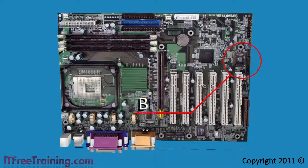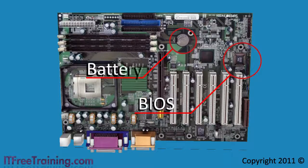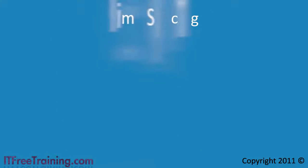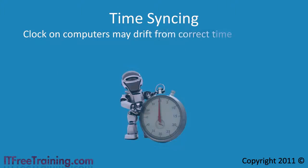All computers have a BIOS in them with a battery backup. The battery ensures the computer's internal clock keeps time even when the computer is shut down and not plugged in. Due to a number of reasons, the time on a computer may drift from the correct time.